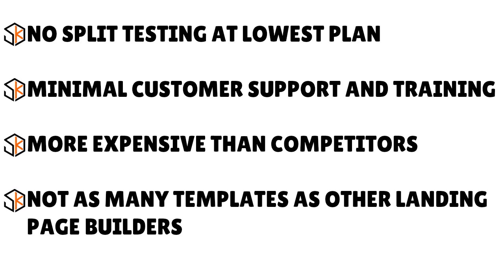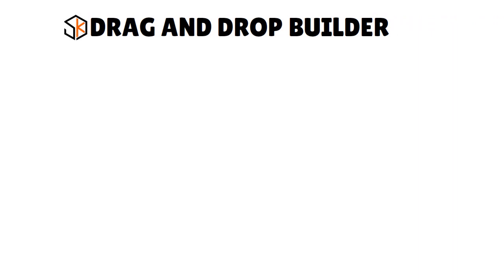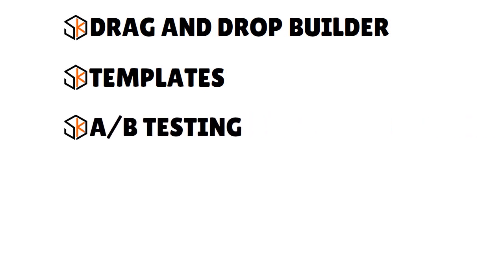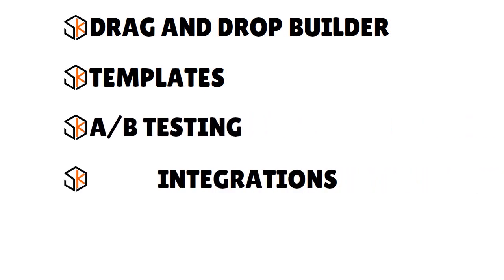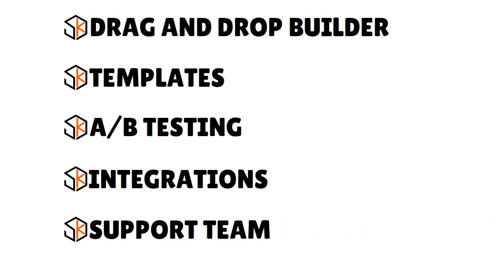When we talk about Unbounce features, the list is extensive by design. You have a drag-and-drop builder, so you don't have to learn any coding. That includes page sections, text boxes, sticky bars, CTA buttons, and even pop-ups — you can really get things done with just a few clicks. You have templates, A/B testing at a very high level, integrations, and a wonderful support team.